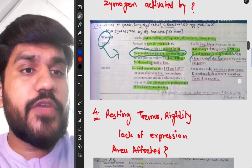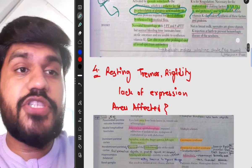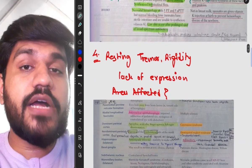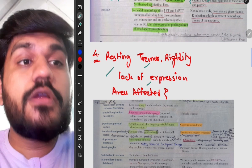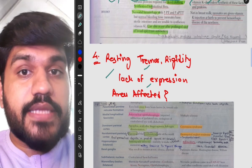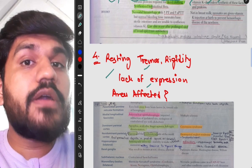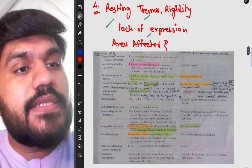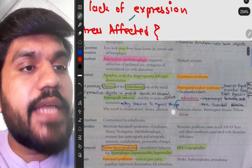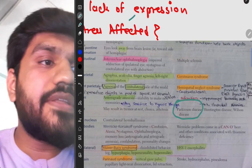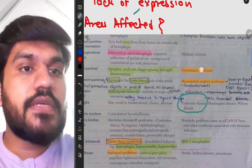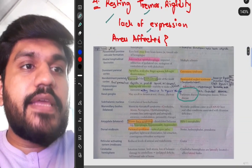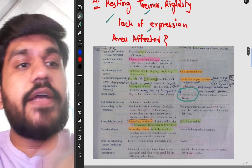Now we are going to move on to fourth question and that is resting tremor, rigidity, lack of expression and area affected. So these symptoms are for Parkinson disease and in Parkinson disease area affected is our basal ganglia. So in basal ganglia as you can see there is nicely written Parkinson disease, another disease is like Huntington disease and Wilson disease.